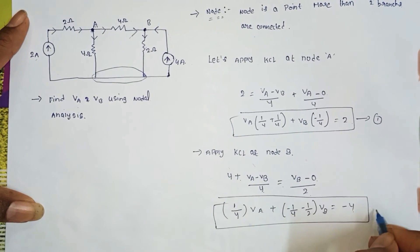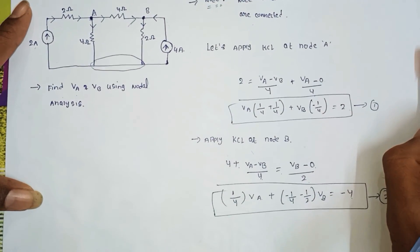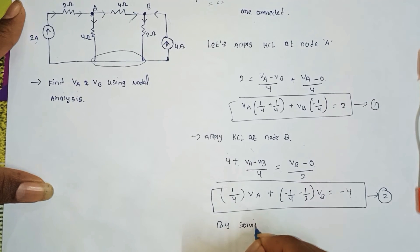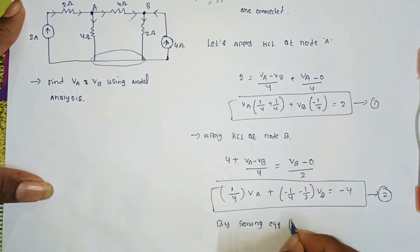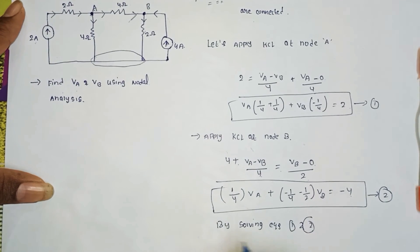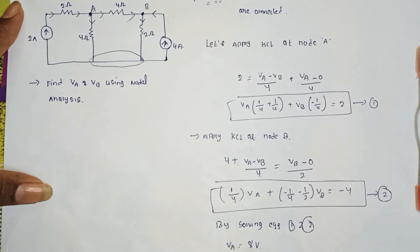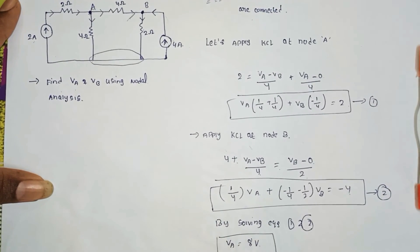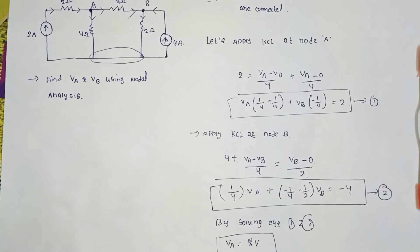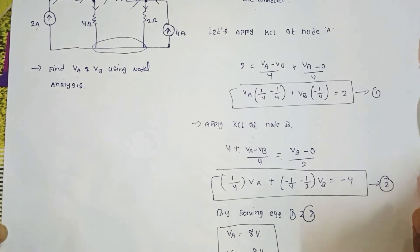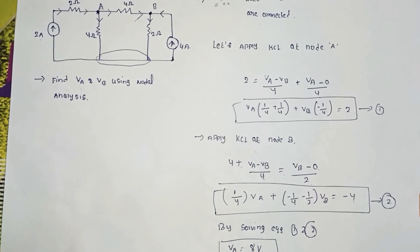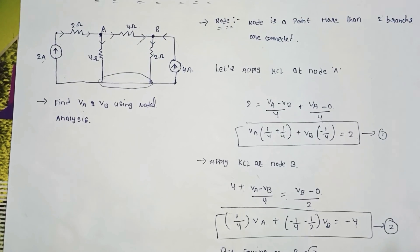By solving equations 1 and 2, we get VA equal to 8 volts and VB equal to 8 volts. These are the potentials of node A and node B. That's all for this video — thanks for watching, please like, share, and subscribe to Ganesh Tarita's YouTube channel.